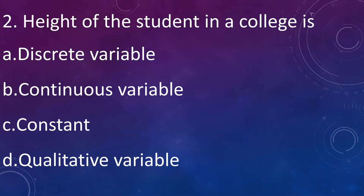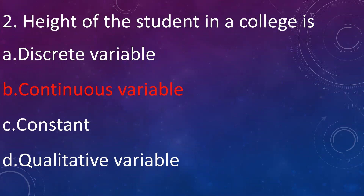The height of a student in a college is: A: a discrete variable, B: a continuous variable, C: a constant, D: a qualitative variable. Answer is B: continuous variable. A continuous variable is a variable which takes a continuous value in a particular interval.